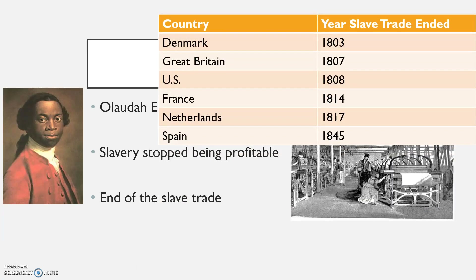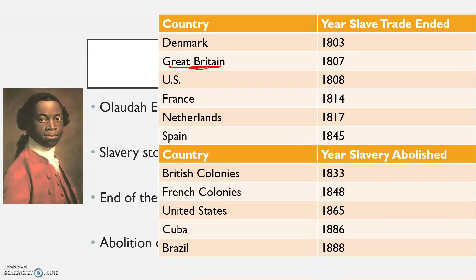Looking at the chart: Denmark ended the slave trade in 1803; Britain — a very significant one — in 1807; the US in 1808; and Spain last in 1845. Smuggling still happened, particularly with the Spanish, but it was outlawed, so if caught they could be prosecuted. Slavery did continue in areas where plantation agriculture could still turn a profit, such as the southern US states, but once the slave trade ended, it was pretty much inevitable that slavery would end as well. The British colonies abolished slavery first, then the US in 1865 after the Civil War, and then Cuba and Brazil by the late 1800s.